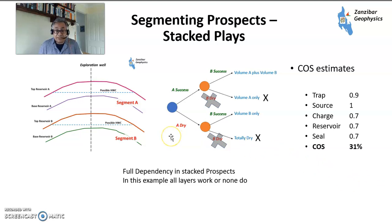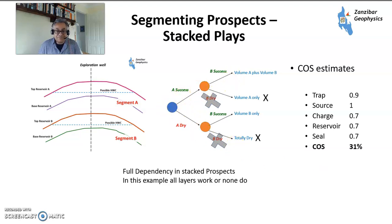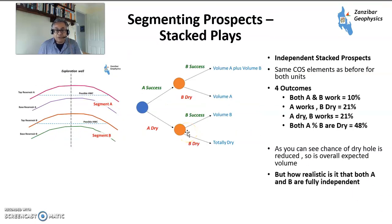Looking again at the decision tree, you have four different outcomes. For one layer: trap presence 0.9, source 1, charge 0.7, reservoir 0.7, seal 0.7 — giving 31%. Under full dependency, both layers work together — if A is success B will be success, if A is dry B will be dry. Under full independence you have four outcomes: A and B both work, A works and B is dry, A is dry and B works, or both A and B are dry — with probabilities of roughly 10%, 10%, and so on. Having a stacked prospect significantly increases your chance of having some success. But how realistic is it that A and B are fully independent? In some cases it's possible, in some cases maybe not — you need to use your judgment.